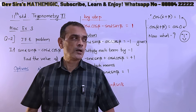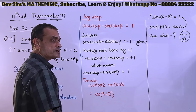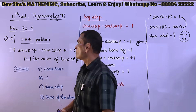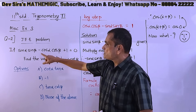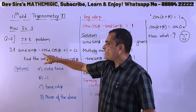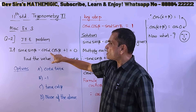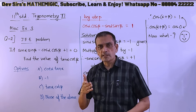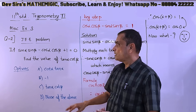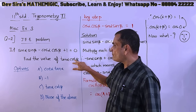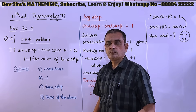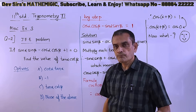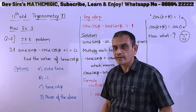So, what is given: sin α sin β minus cos α cos β plus 1 equal to 0 — that is given. We need to find the value of tan α cot β. Four options are given which we will discuss later.